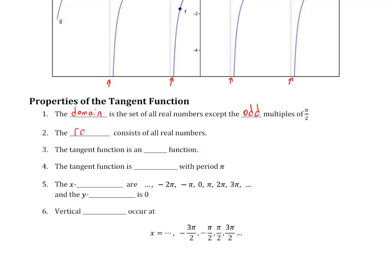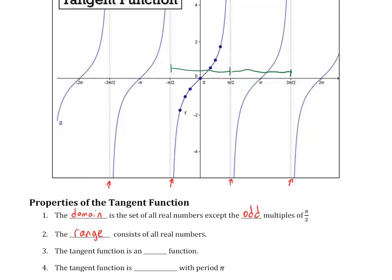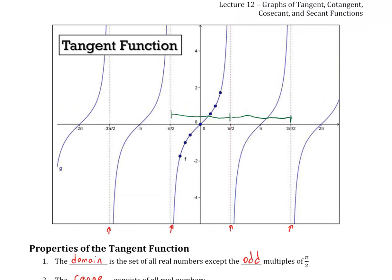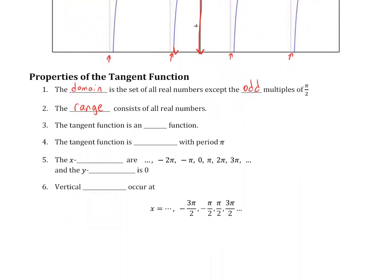The range, now interestingly enough, is all real numbers because if you look at the heights that this thing hits on the y-axis, it actually will go to every possible height because this thing goes all the way up and all the way down. So it covers the entire y-axis vertically, so the range is all real numbers.